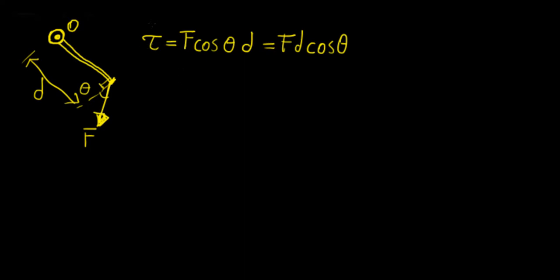There is a particular problem with this: we're only really getting the magnitude of the torque. Usually we can infer the direction because we're confining our rotation to just two dimensions, so it becomes obvious which way things are rotating. We don't actually need a direction in 2D.